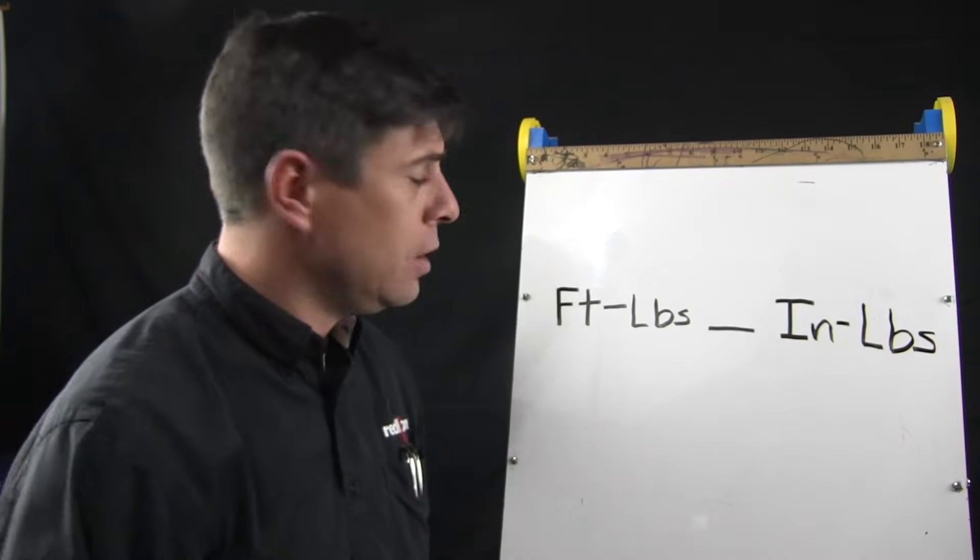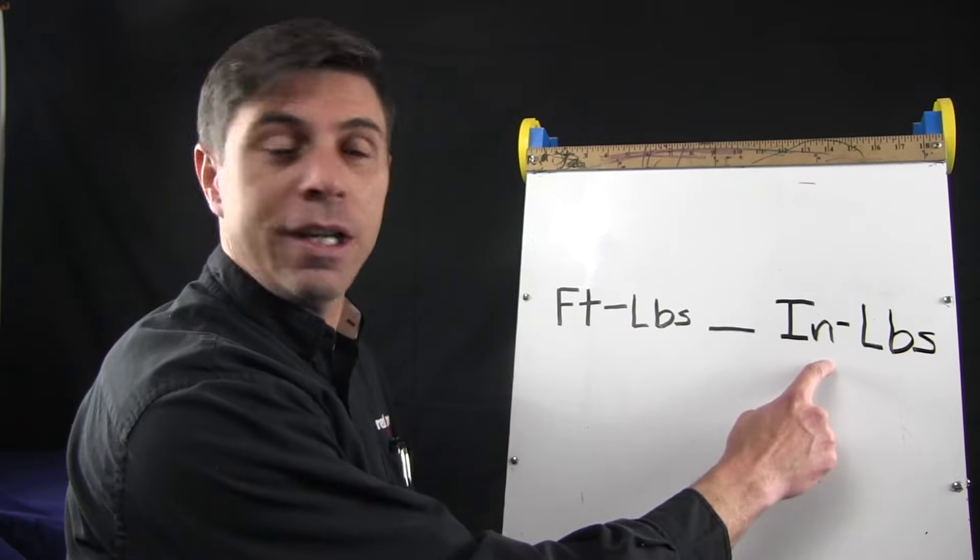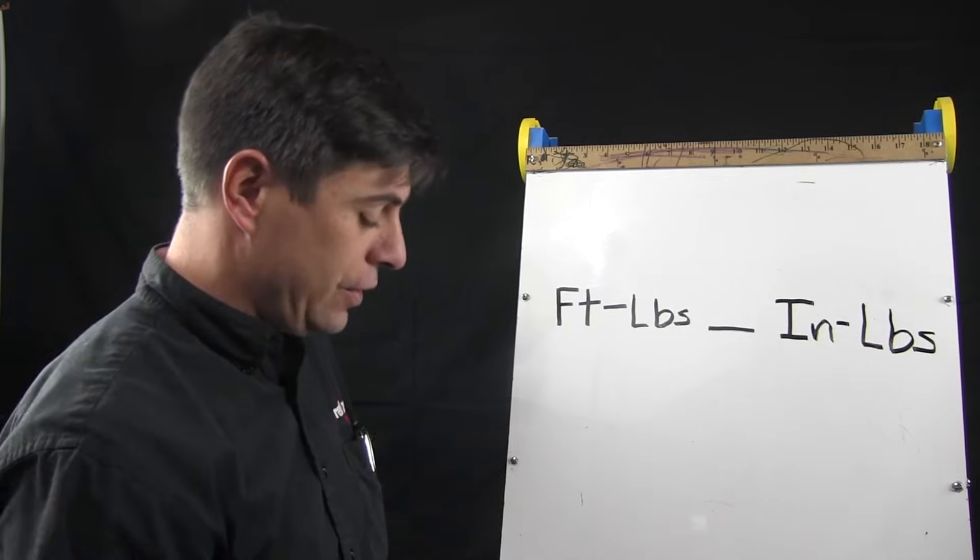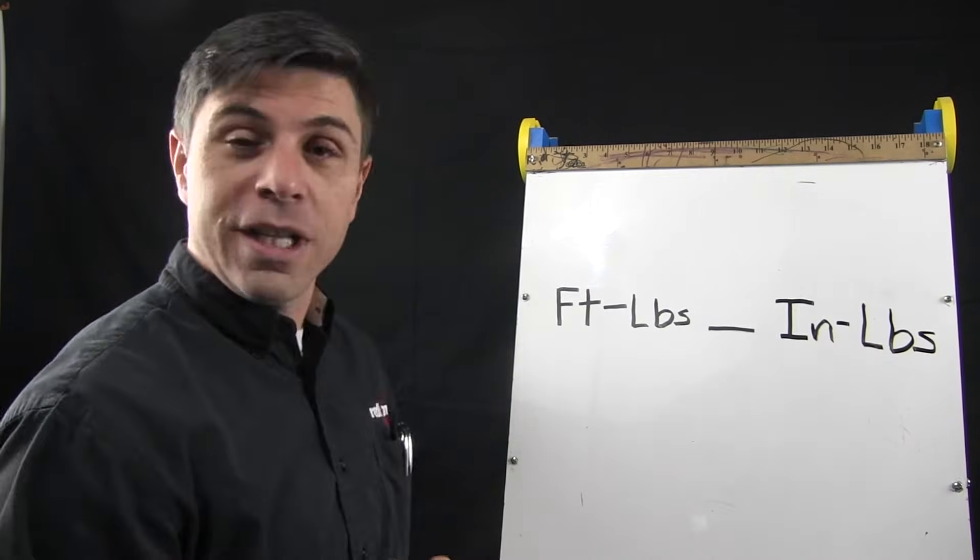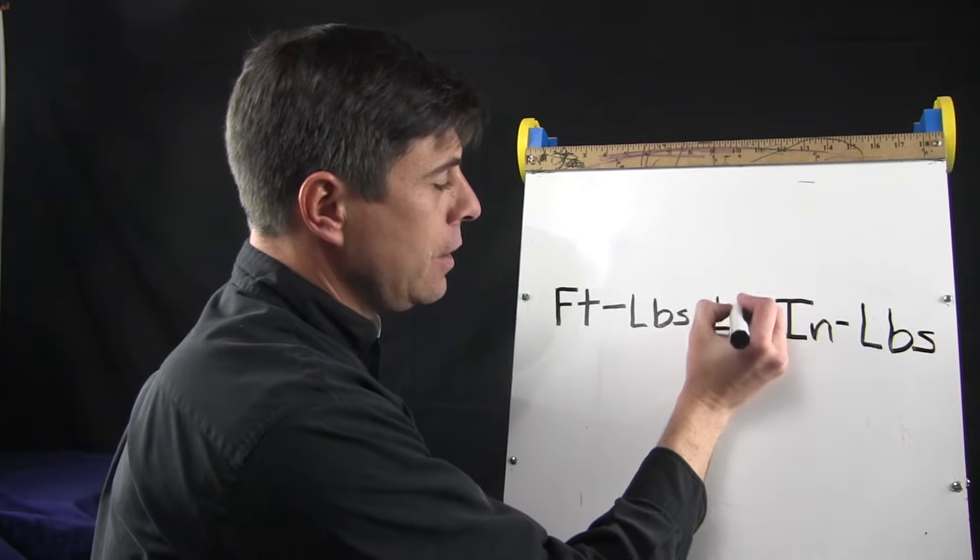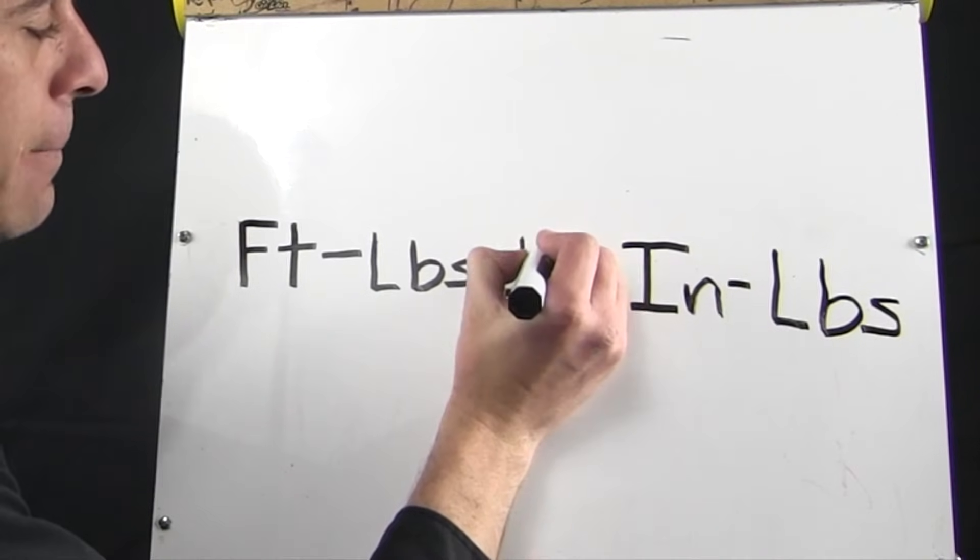Today we're going to be talking about how to convert foot-pounds into inch-pounds and inch-pounds into foot-pounds. To start off, the first thing you need to know is that 12 is going to be the constant for this equation every time.